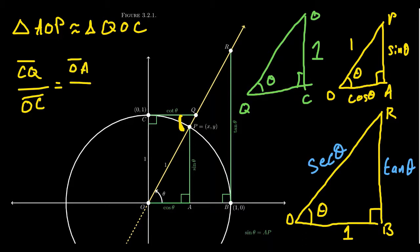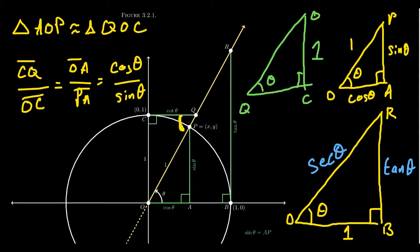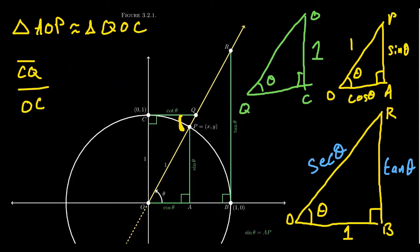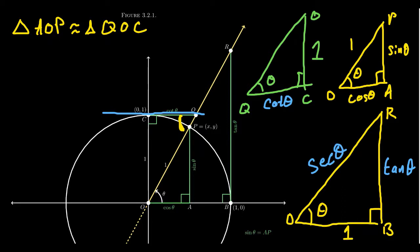So QC equals cotangent of theta. Notice that the line QC is also a tangent line to the circle — although it's a vertical tangent line, complementary to the horizontal tangent line BR we found before. That's where cotangent gets its name: it's complementary to the tangent, and it also measures the length of a tangent line segment associated to the unit circle.